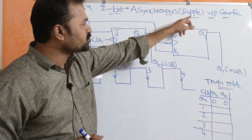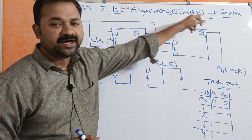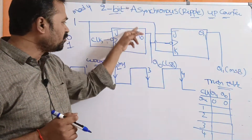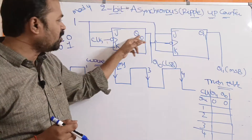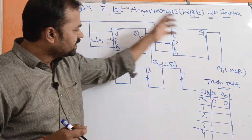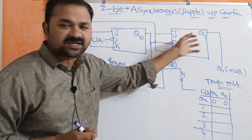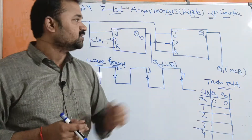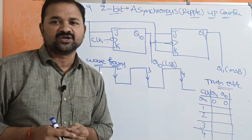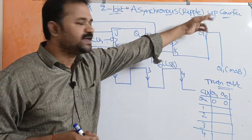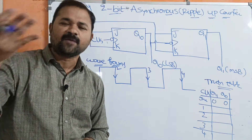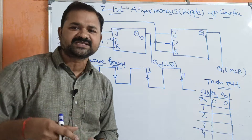This counter is also called a ripple counter because we are connecting the output of one flip-flop as the clock pulse to the next flip-flop — that's why it is called a ripple counter. This is also called an up counter. In asynchronous counters, we will have both an up counter and a down counter.